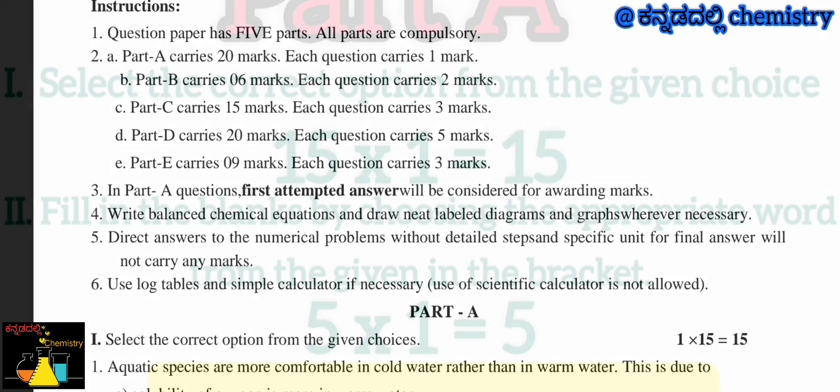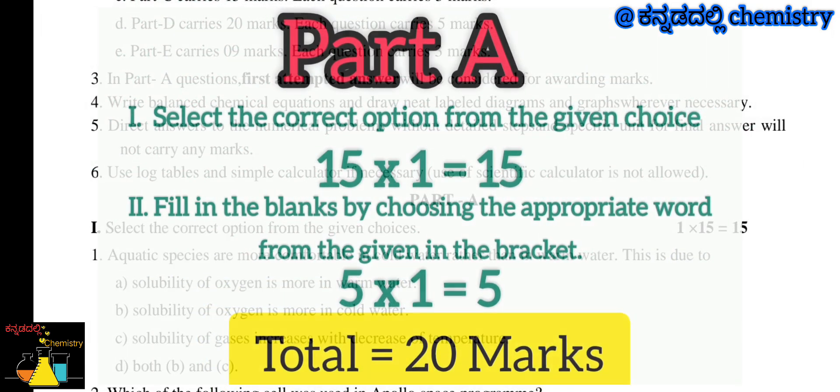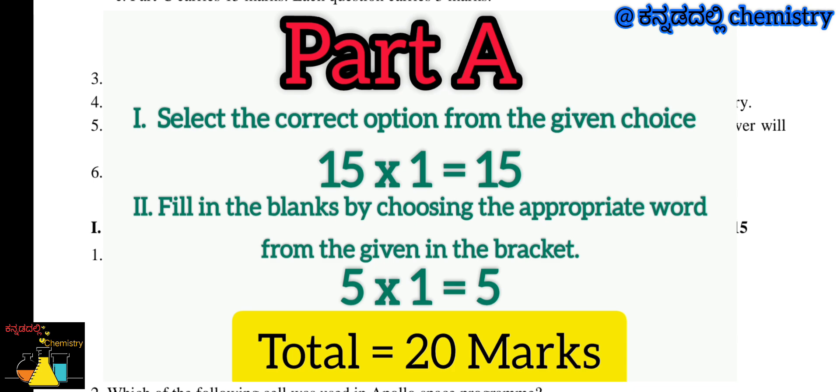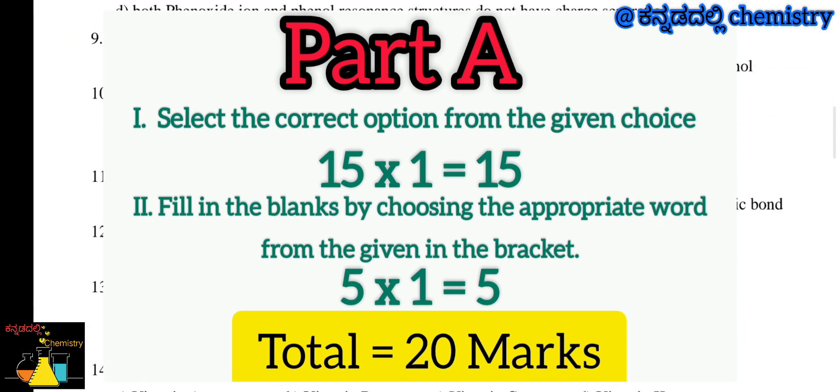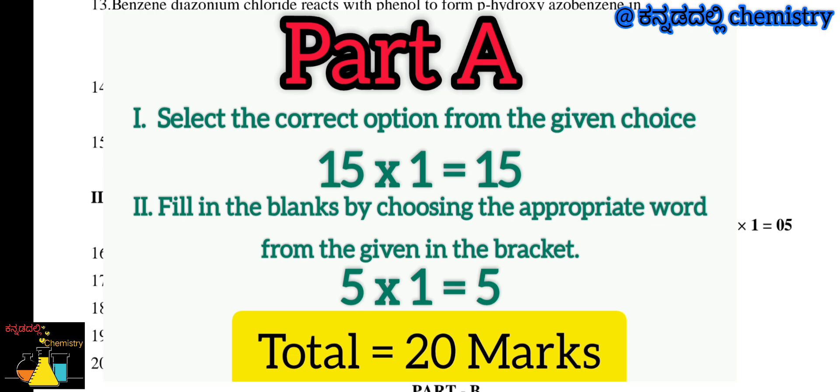In Part A, the first section asks you to select the correct options. There are 15 questions in total, each carrying 1 mark, so 1 into 15 gives 15 marks. The second section of Part A is fill in the blanks by choosing the appropriate word from the given brackets. There are 5 questions, each carrying 1 mark, for a total of 5 marks.